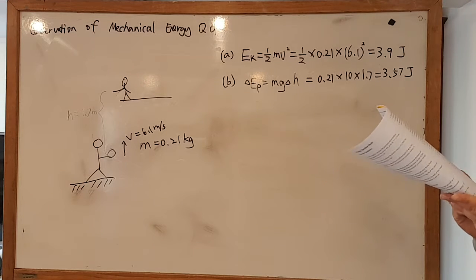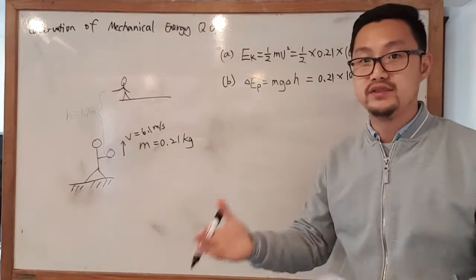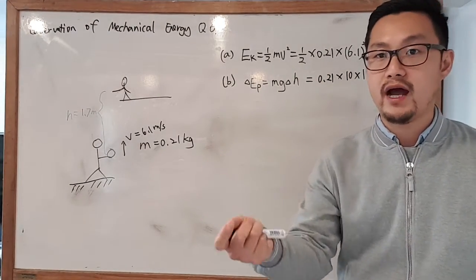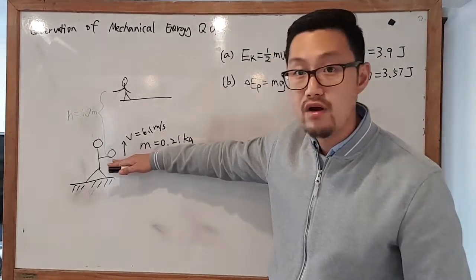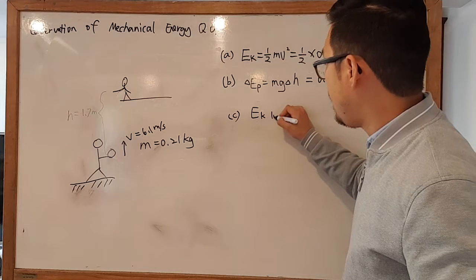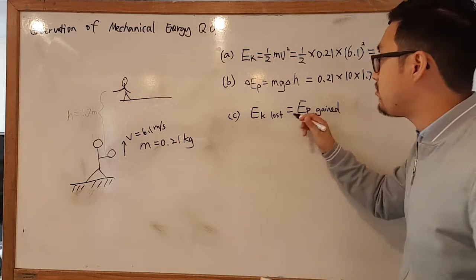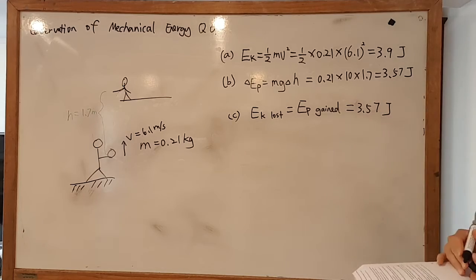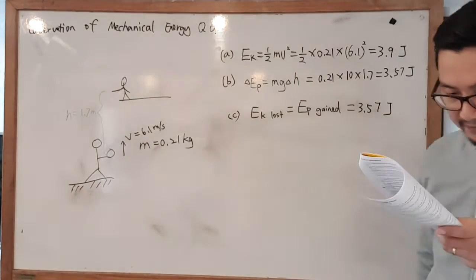Part C: How much kinetic energy does the ball lose as it rises? As the ball is rising, the kinetic energy is losing. Where does the kinetic energy lost go? It's lost to the gravitational potential energy. So EK lost equals the EP gained, which is 3.57 joules.